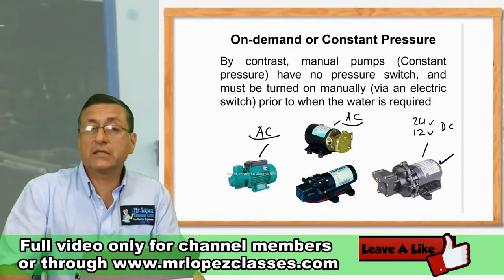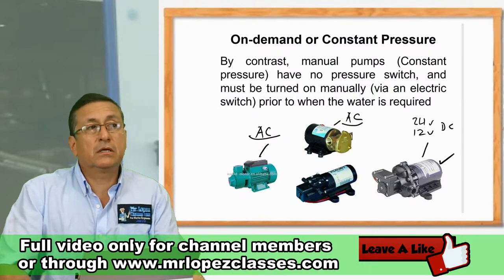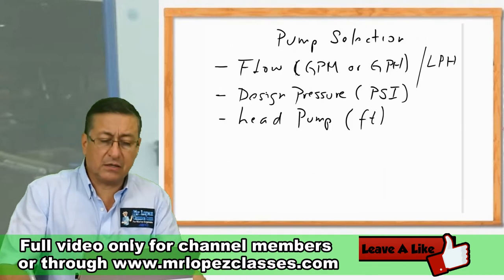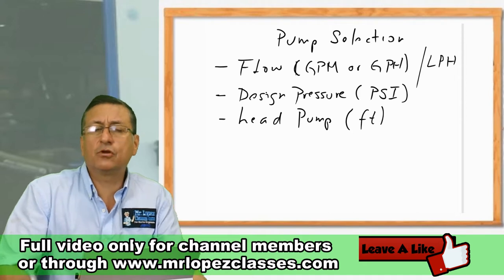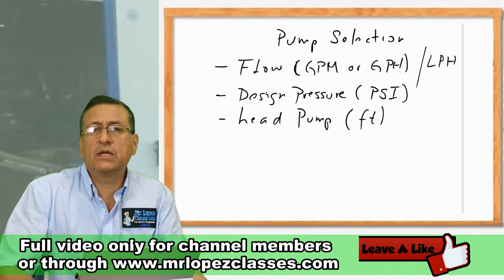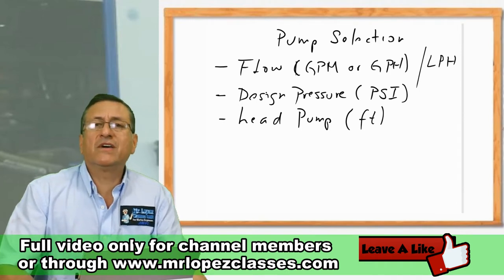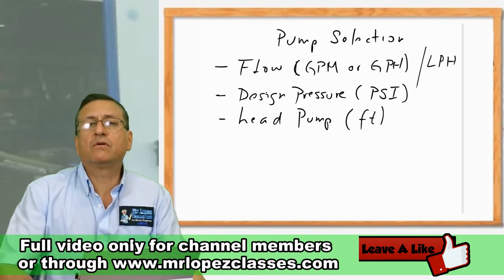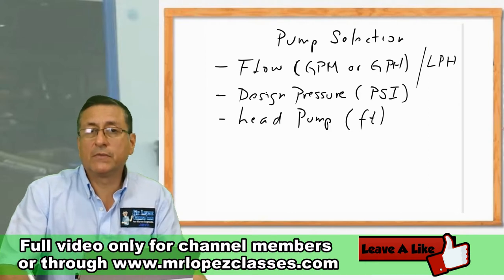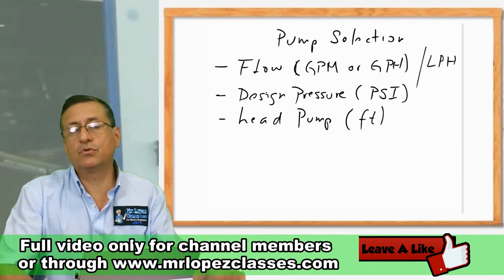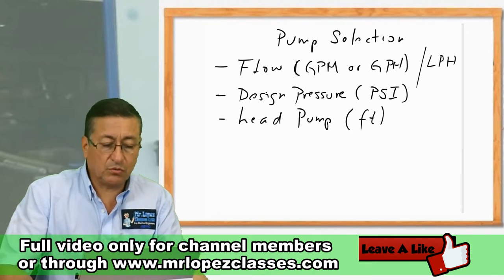When you try to select a pump, you need to identify three important factors. The first one is the flow, in gallons per minute or gallons per hour. You can convert gallons per minute into gallons per hour by multiplying or dividing by 60, since one hour equals 60 minutes. Some manufacturers use liters per minute — you simply use conversions to convert one into the other.